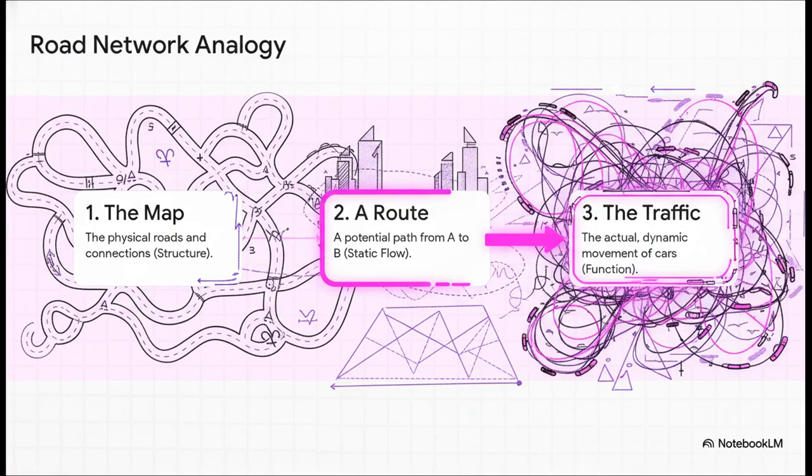Let me break it down with an analogy that'll make this super clear. Think about a city's road network. The map itself, with all the streets and intersections, that's the structure. A route you plan on Google Maps, that's just a potential path. But the traffic, the real-time, dynamic, messy flow of all the cars trying to get around traffic jams and accidents, that is the function. The map doesn't tell you if you're actually going to get to work on time.